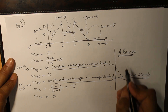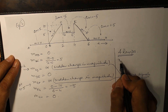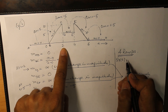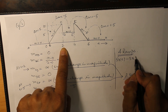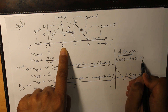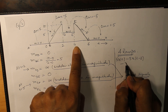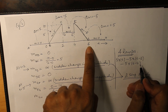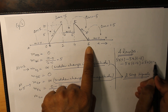The 4 ramps are: first, 5r(t); second, at t equals 2, minus 5r(t minus 2); at t equals 4, minus 5r(t minus 4); and at t equals 6, plus 5r(t minus 6).